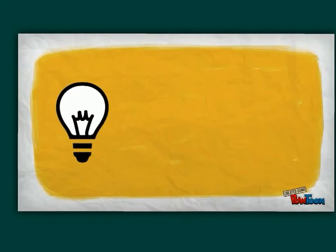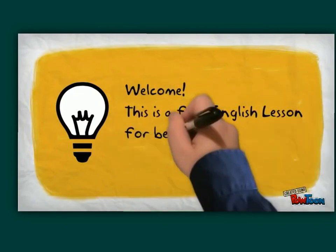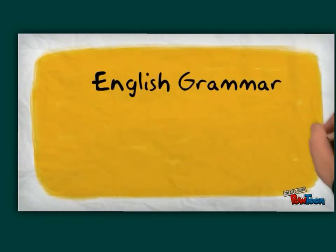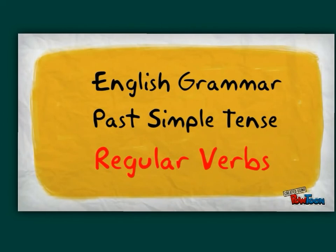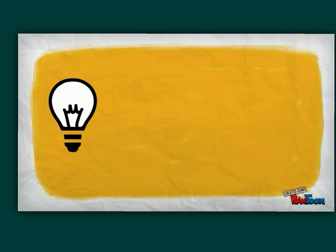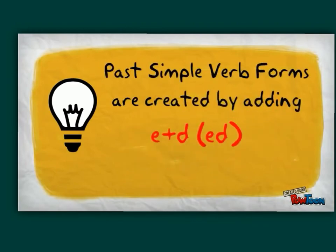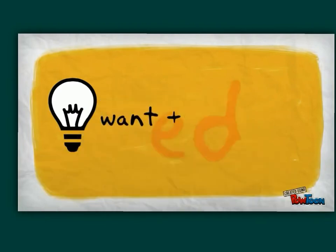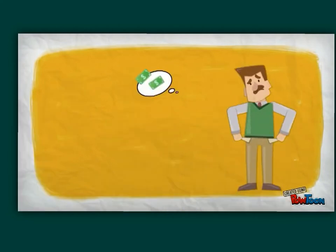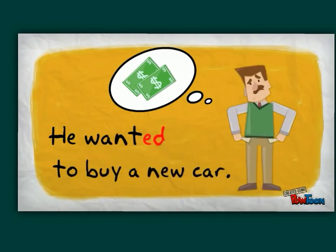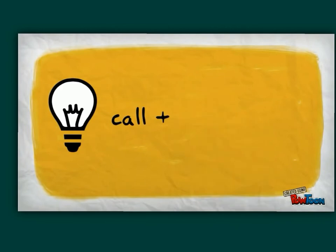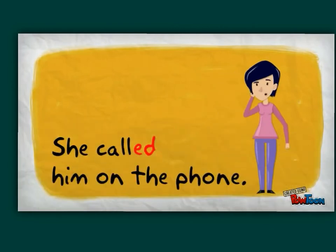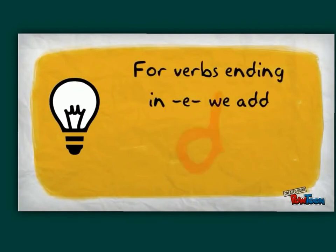Past simple verb forms are created by adding 'ed' at the end of the verb. For example: 'want' → 'wanted' — 'He wanted to buy a new car.' 'Call' → 'called' — 'She called him on the phone.' For verbs ending in 'e,' we add 'd' at the end.